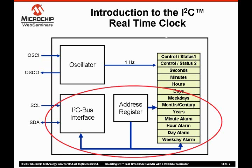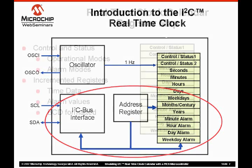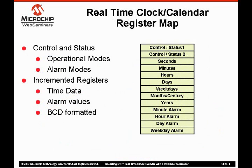So it's actually a very simple device that we can model in our PIC microcontroller. This next slide shows a real-time clock register map from an existing I2C real-time clock. The registers highlighted right now are the control and status registers, at addresses 0 and 1. These registers determine the operational modes of the real-time clock calendar and also control other functions like the alarm and have status indicators for interrupts. The next set of registers highlighted contain the time and alarm values — things like seconds, minutes, hours, days, etc. — and these are typically binary coded decimal formatted.